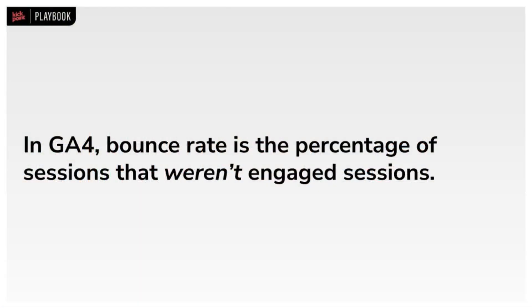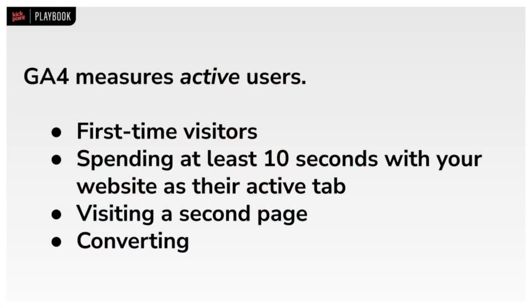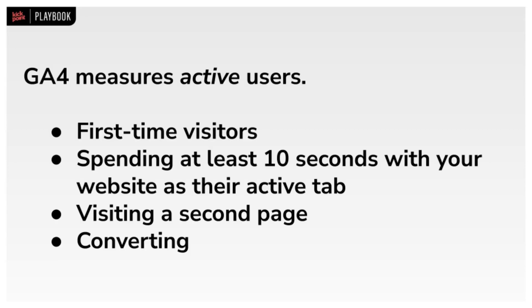Now in GA4, there is a new metric called engaged sessions — and we all thought bounce rate was dead. But it isn't. GA4 decided to introduce a metric called bounce rate, but it's not measuring the same thing. In GA4, bounce rate is the percentage of sessions that weren't engaged sessions. An engaged session is a visit to your website for the first time, spending at least 10 seconds with your website as the active tab, going to a second page, or converting. You can make that 10-second threshold longer in your GA admin settings. But that isn't at all what bounce rate was measuring in UA. I do like engaged sessions — it's a really useful metric — but it isn't going to match your bounce rate in UA at all. If you were reporting on bounce rate to your boss or client, you'll have to explain why that metric is going away and why engagement rate is more effective.